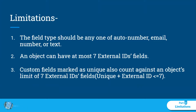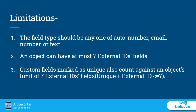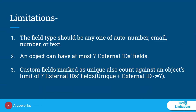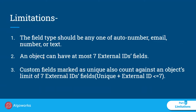Second, an object can have at most seven External ID fields. The last limitation is a notable one: custom fields marked as Unique also count against an object's limit of seven External ID fields. So the combined count of unique fields and External ID fields must always be less than or equal to seven within an object.